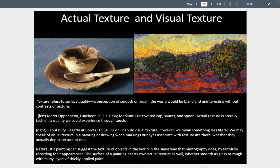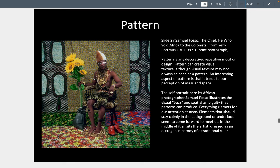Actual and visual texture. Meret Oppenheim's 'Luncheon in Fur' — we see a fur-covered cup, saucer, and spoon. It's very pretty, you want to touch it; it's a real texture, but you wouldn't want to drink out of it. If you think about drinking milk out of this, it seems kind of disgusting. Visual texture, like in this Van Gogh painting, is created by using shape, color, or thickness in paint to give us a sense — here with these lines using dark greens and blues that give us a sense of leaves and a very strong texture.